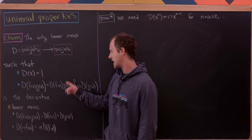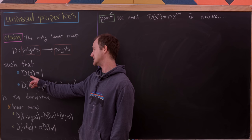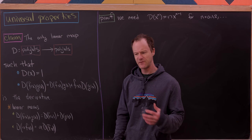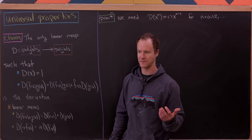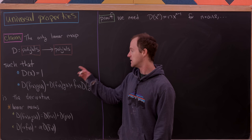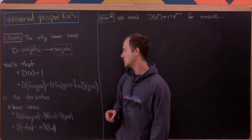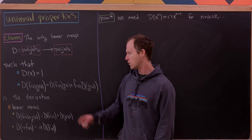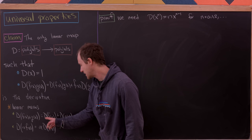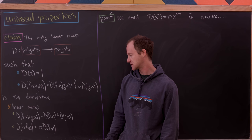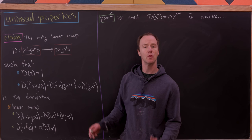Those two rules are: d(x) = 1, and d(f·g) = d(f)·g + f·d(g), which looks like the product rule. Notice the usual definition of the derivative involving the slope of the tangent line isn't here at all — these are just two properties that you prove later. Restricted to polynomials, those two properties force you to have the derivative. Recall that a linear map means d(f(x) + g(x)) = d(f(x)) + d(g(x)) and d(α·f(x)) = α·d(f(x)) for a real number α.